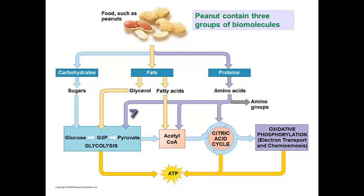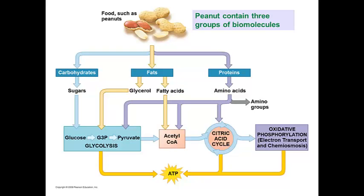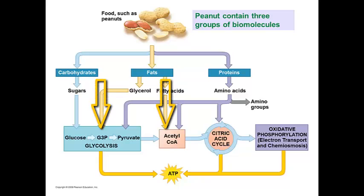Excess amino acids are converted by enzymes to intermediates of glycolysis, the citric acid cycle, and acetyl-CoA. They are deaminated — this is where the amino group is removed from those amino acids, and that amino group gets put onto a molecule called urea, which we excrete through our urine. Fats are hydrolyzed into glycerol and fatty acid, and they enter into the pathway as specific intermediates to glycolysis and/or acetyl-CoA formation. Glycerol is converted to an intermediate called G3P, the fork in the road for glycolysis, and fatty acids are broken down in two-carbon fragments that enter the citric acid cycle as acetyl-CoA.